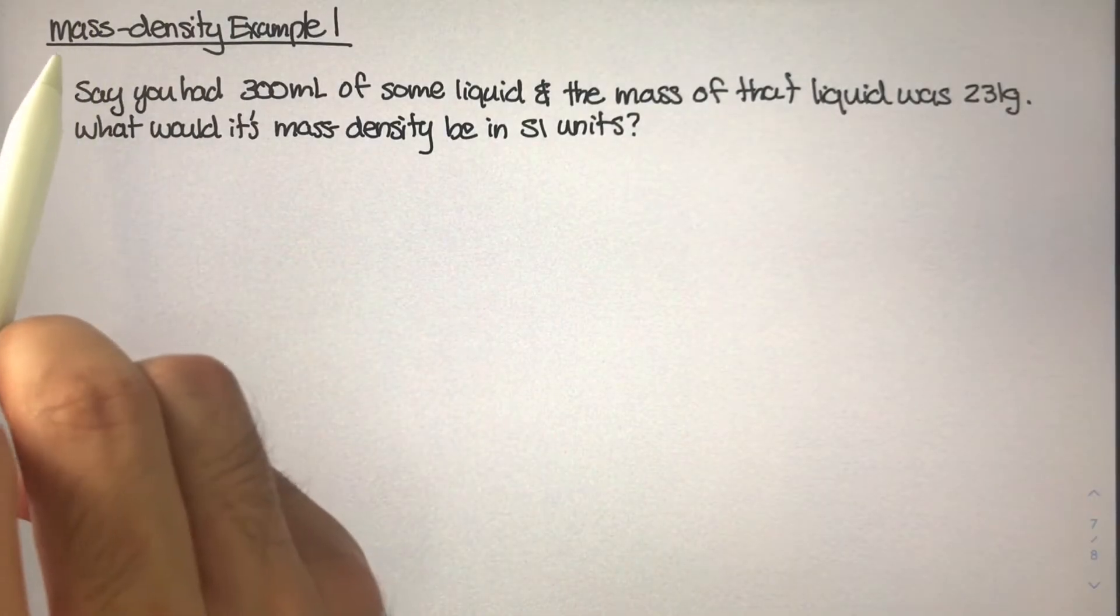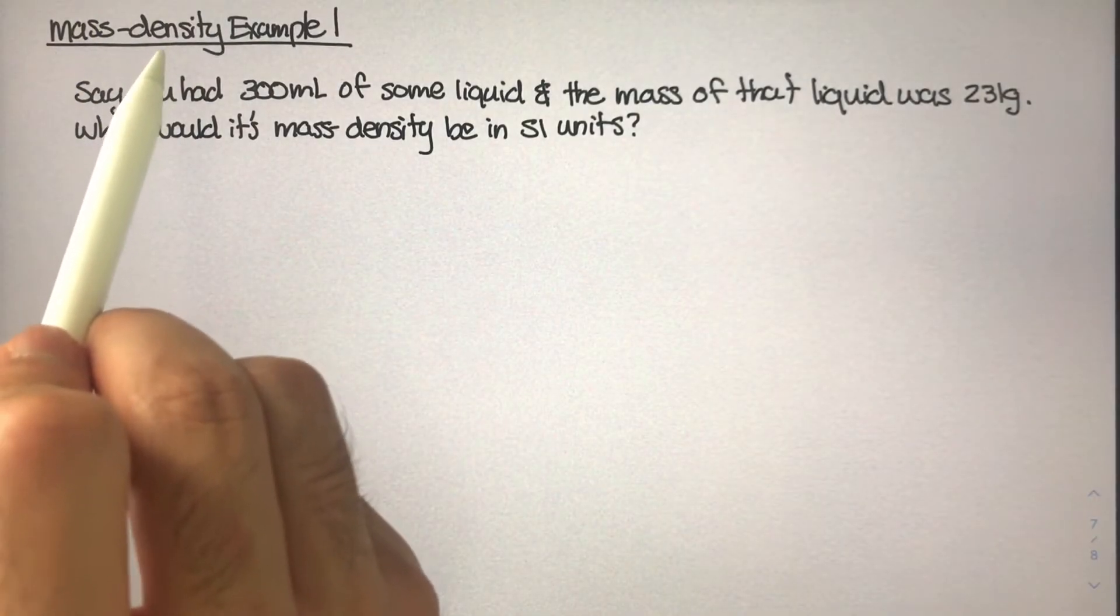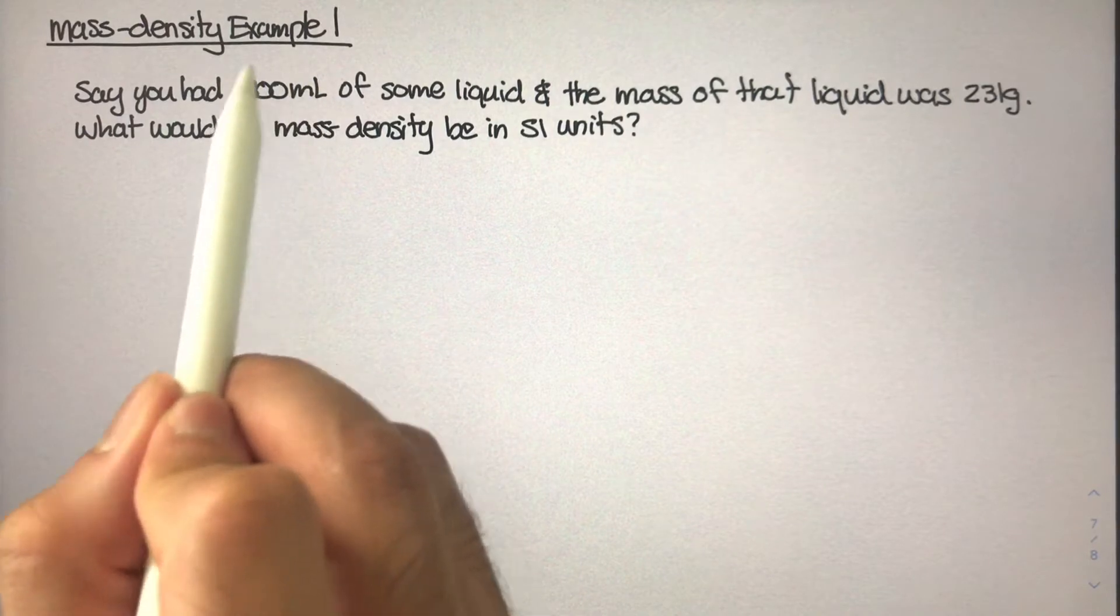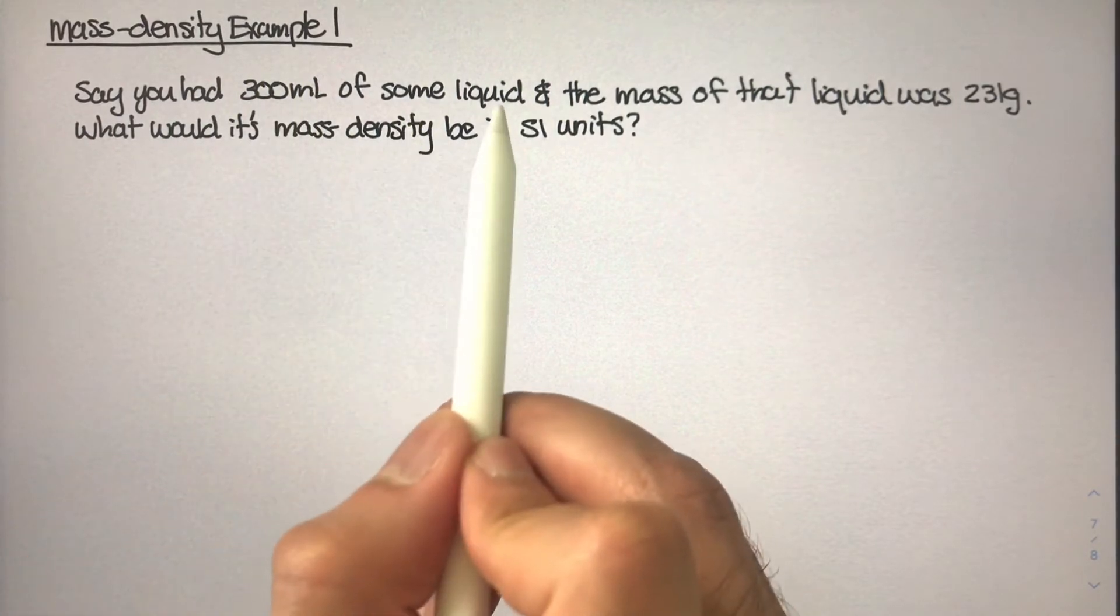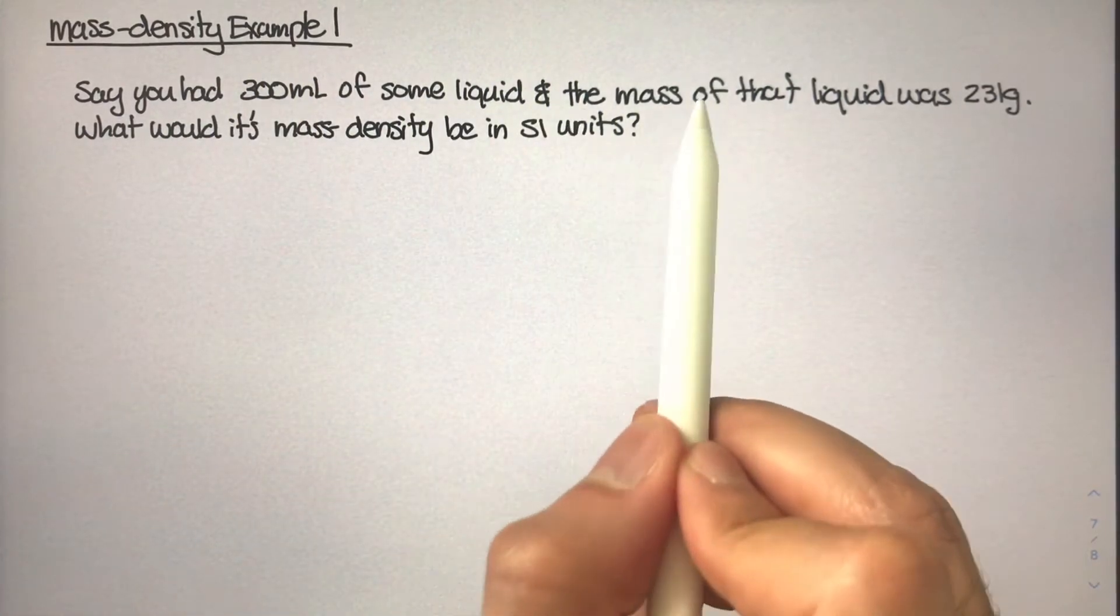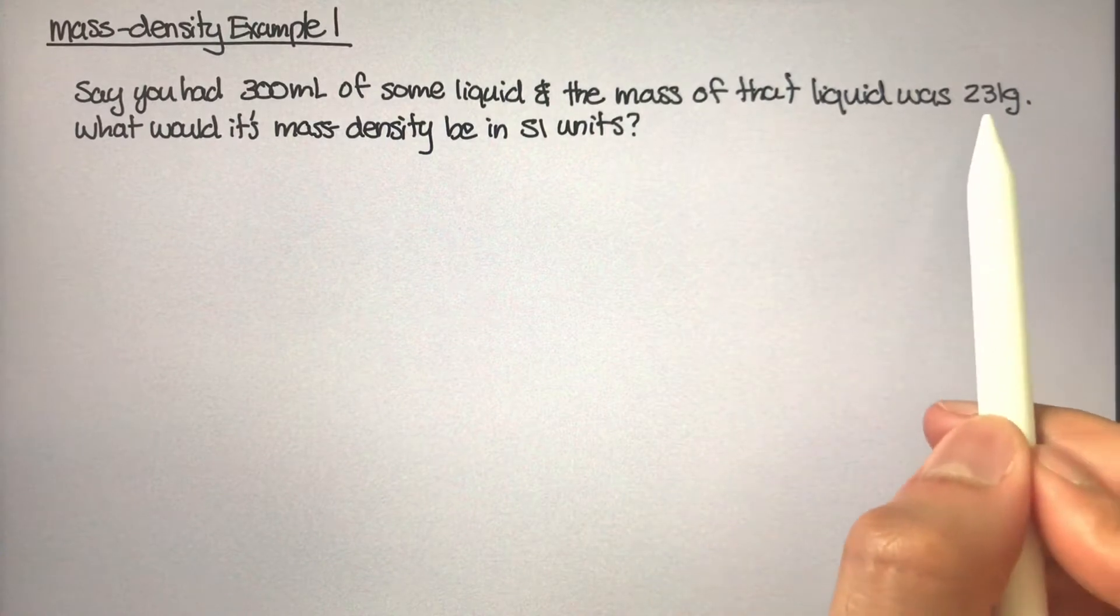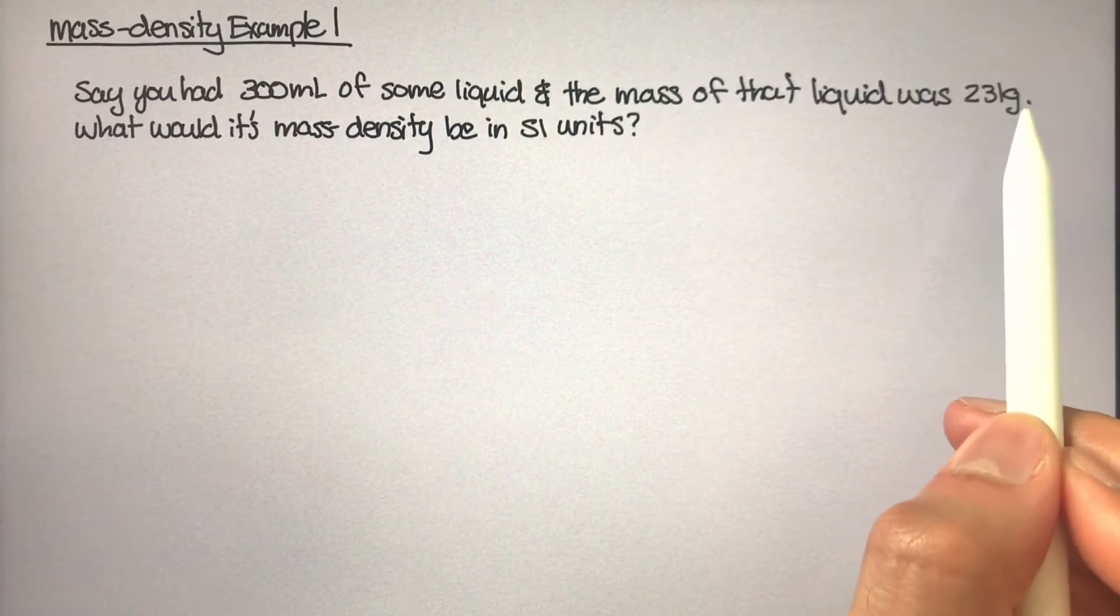All right, let's look at our first example for mass density. Say you had 300 milliliters of some liquid, it could be any liquid, and the mass of that liquid was 231 grams.